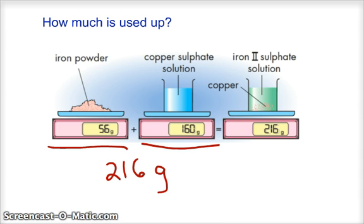If the rule I just told you is true, then we must have the exact same amount of grams in our product. Let's look at what our product is. Our product is iron-2 sulfate solution, and indeed, when we put that on the balance, we get 216 grams. Our rule holds true, and there's no exception to this rule.